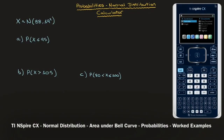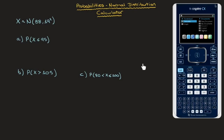Hi everyone. In this video we're going to learn how to calculate probabilities when working with the normal distribution, and the focus is going to be to solve these with our calculator. Throughout this tutorial we're going to work with the continuous random variable capital X, which follows a normal distribution whose mean is 88 and whose variance is 19 squared. Its standard deviation is therefore 19, so mu equals 88 and sigma equals 19.